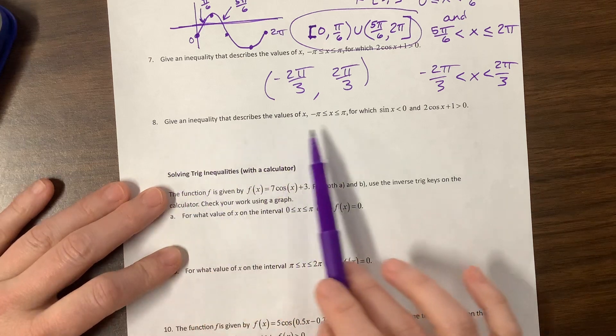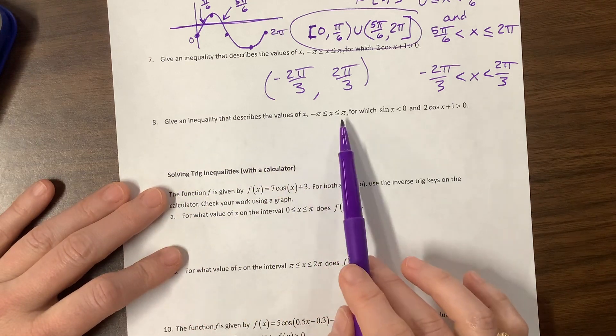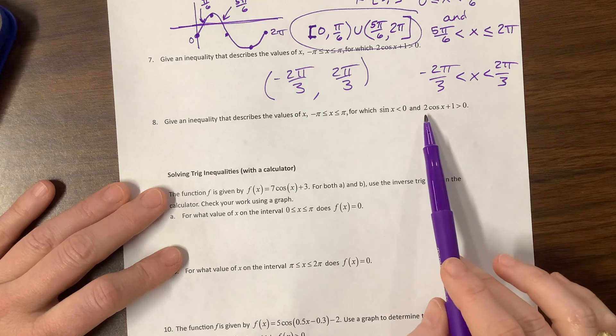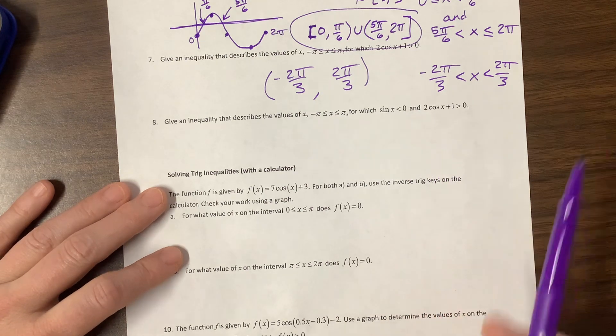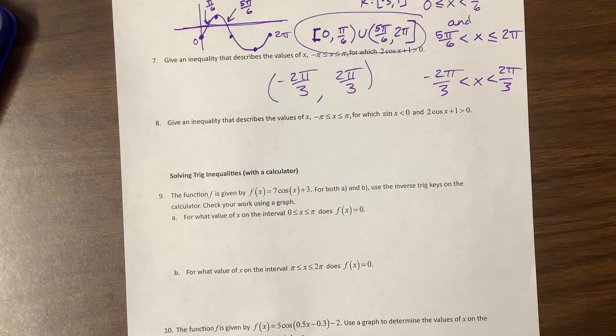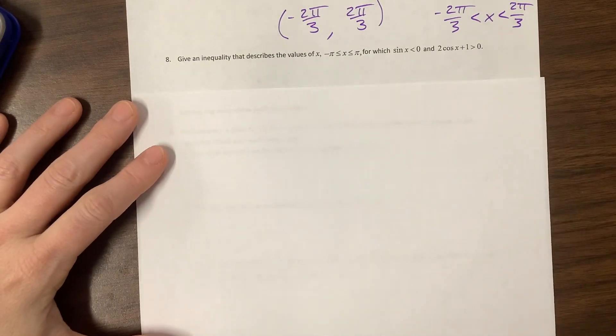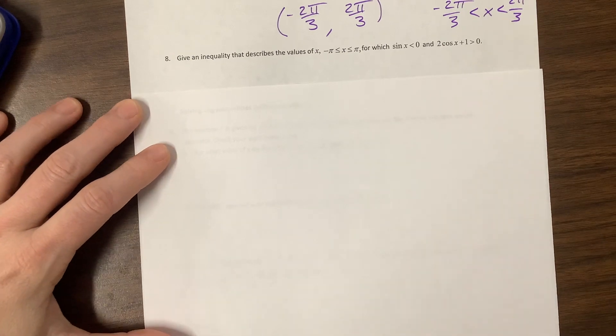Given inequality that describes the values of x between negative pi and pi, for which sine of x is less than 0 and 2 cosine x plus 1 is less than 0. I have not tried this problem. I have not taught this material ever before. This is new to me, so you get to watch me struggle.